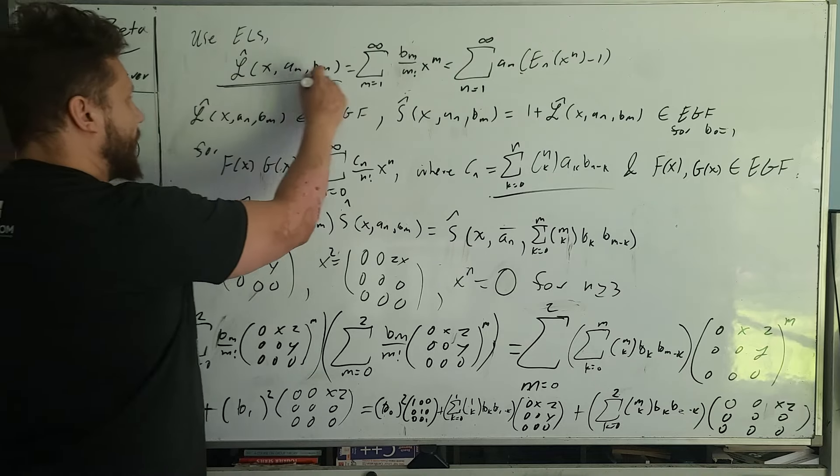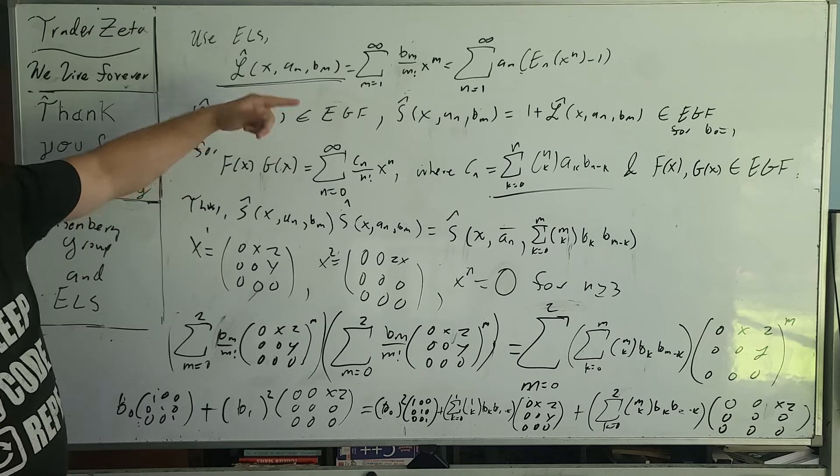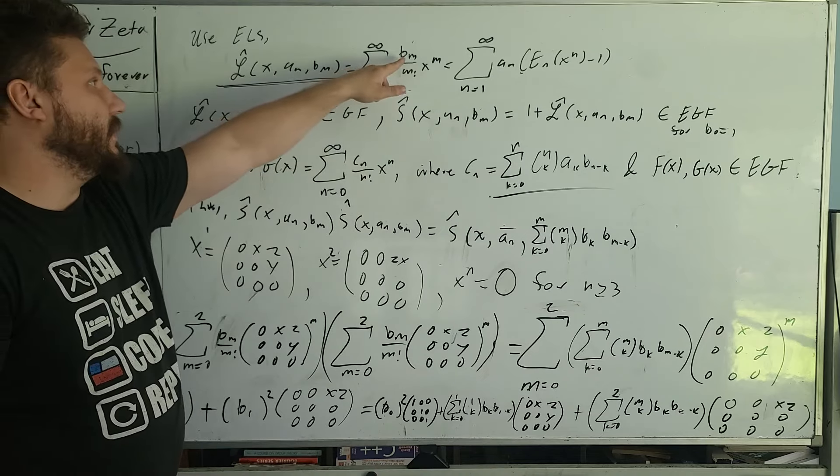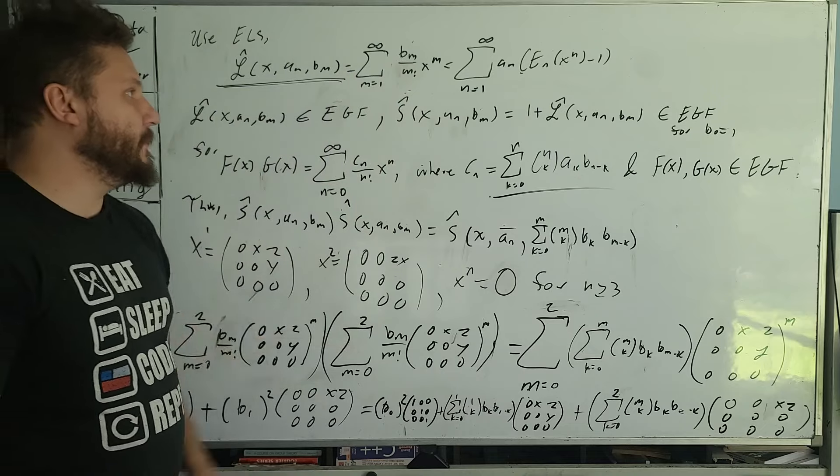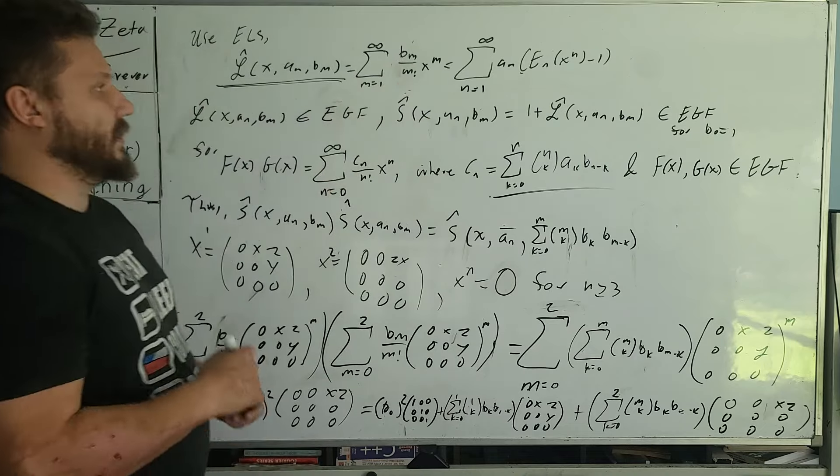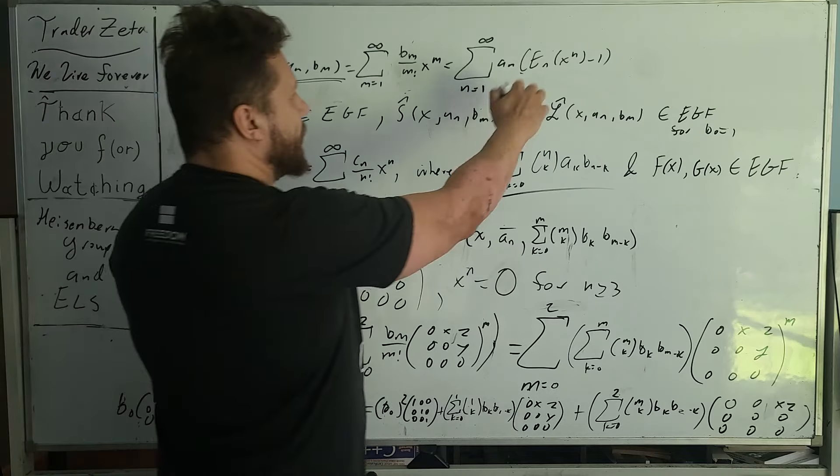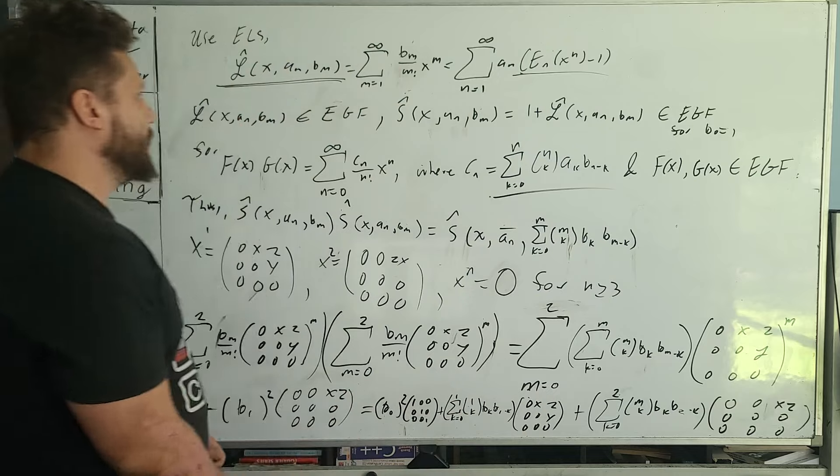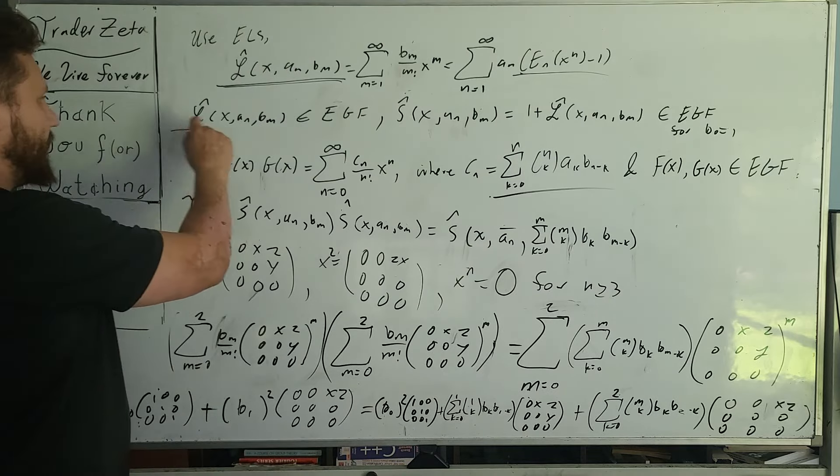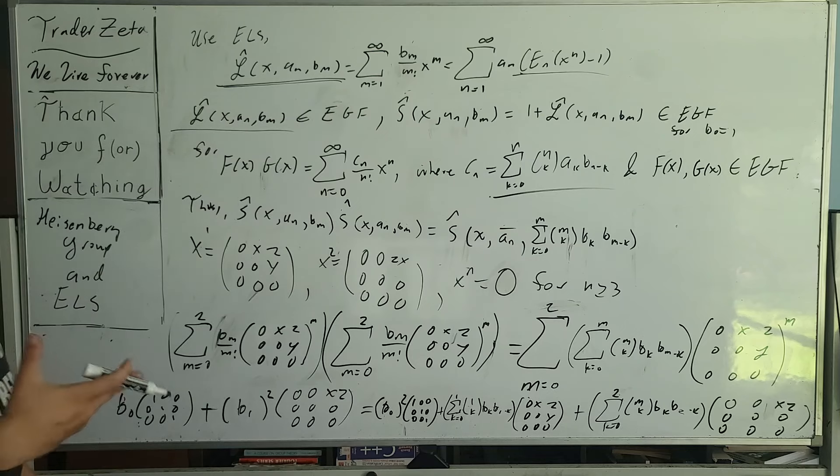Here we state what the exponential Lambert series is. It is the exponential generating function of the Lambert series. You have some b sub m divided by m factorial. You have some a sub n, and a sub n and b sub m are connected by the Mobius inversion formula, both arithmetic functions. Here we have the Mittag-Leffler function. And so we say that the exponential Lambert series is an element of the exponential generating function class.